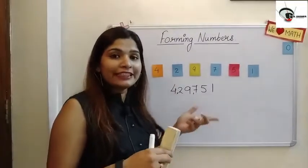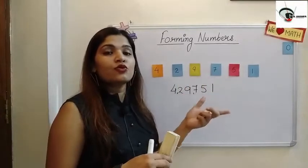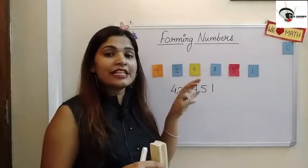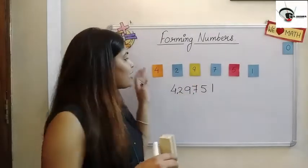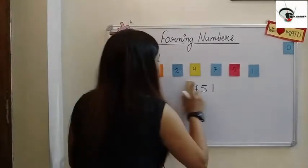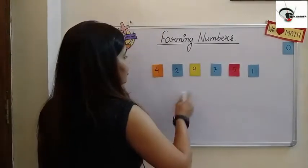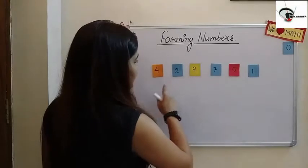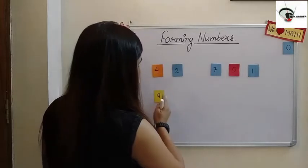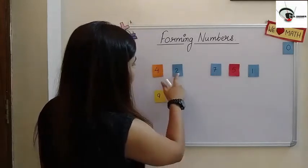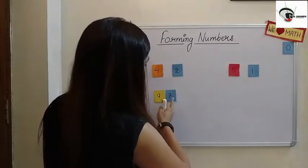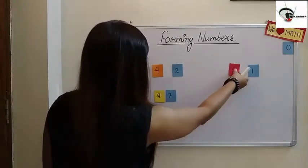If somebody asks us to form the greatest number by using these digits, we need to do the same as arranging numbers in descending order. So we arrange these given digits in descending order. The first step is to take the greatest digit — that is nine. Then the digit smaller than nine: seven. Then the digit smaller than seven: five.